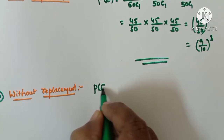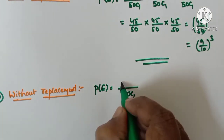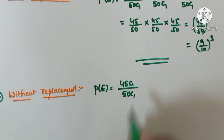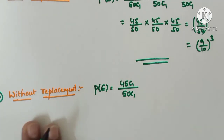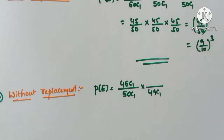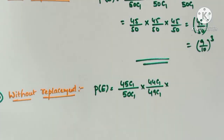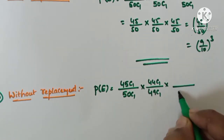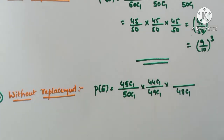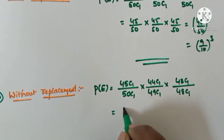Without replacement: E is the event of getting three screws which are non-defective, drawn one after the other. The probability of this event: first, the bag has 50 screws and one screw drawn is non-defective — 45 non-defective available, so probability 45/50. Without replacement, now the bag has 49 screws and 44 non-defective remain, so probability 44/49. Then the bag has 48 screws and 43 non-defective remain.